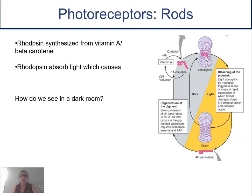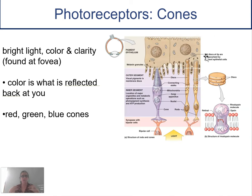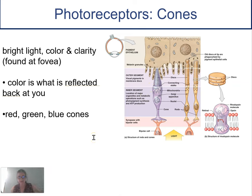Rods are not on the fovea, so if you look directly at something at night, you won't see it. If you're looking at stars or something dimly lit, you need your rods — but since rods are your peripheral vision, you have to look slightly to the side and then you can suddenly see it. Cones give us our best crisp vision; they're found on the fovea centralis. The color you see is what's reflected back at you — something looks purple because it reflects purple light, white reflects all light, and black absorbs all light with nothing reflected. We have red, green, and blue cones that overlap in their spectra to give us all the different colors.